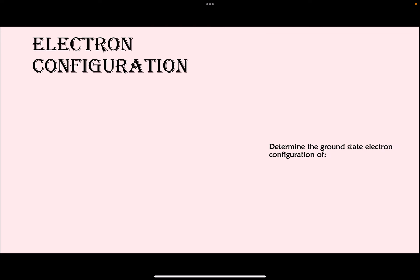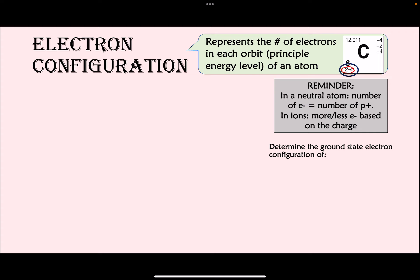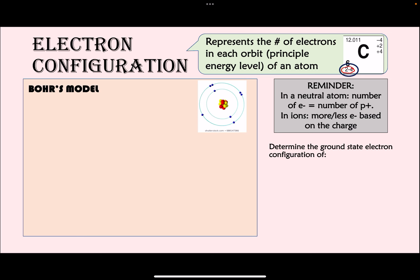Electron configuration represents the number of electrons we have in each orbit. For Regents Chem, we focus on Bohr's model. Your electron configuration is given in your periodic table — the number all the way at the bottom. For a neutral atom, number of protons equals number of electrons. For carbon with atomic number 6, we have 6 electrons to arrange in orbits. Bohr called the orbits energy levels or principal energy levels — they show how far electrons are from the nucleus.